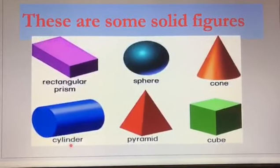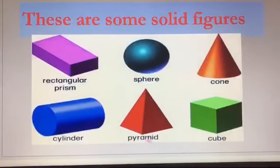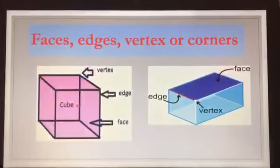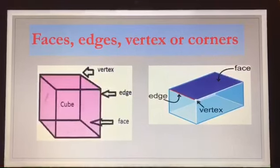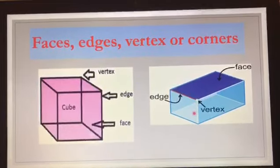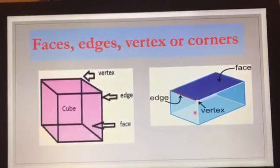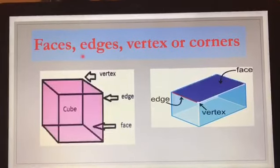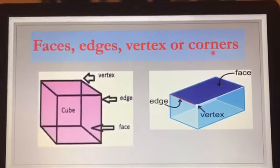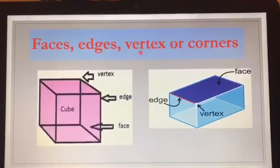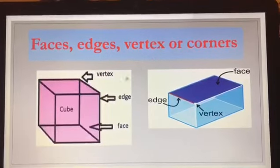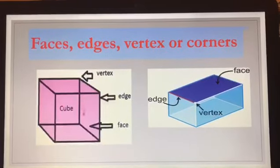Cylinder, pyramid, cube. Here we see two shapes — this one is called a cube and this one is a rectangular prism. Let's see the faces, edges, and vertex or corners of these shapes. Vertex and corners are both the same.